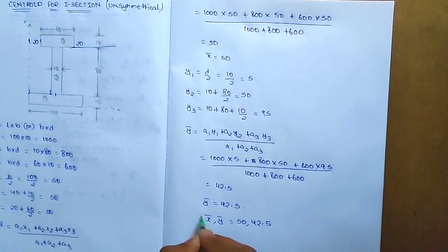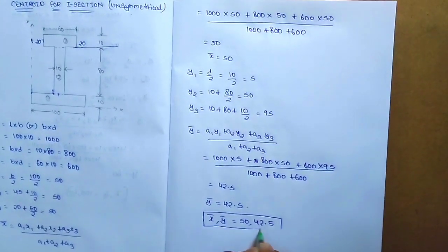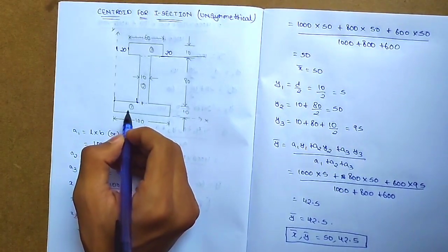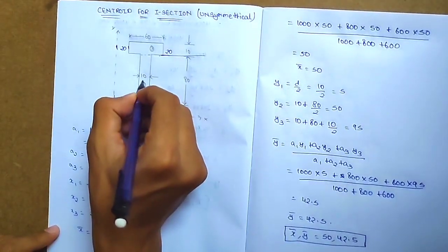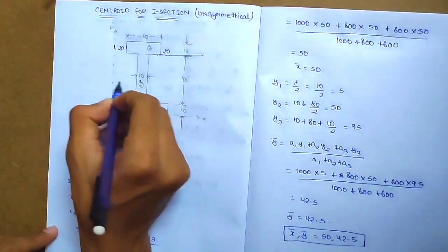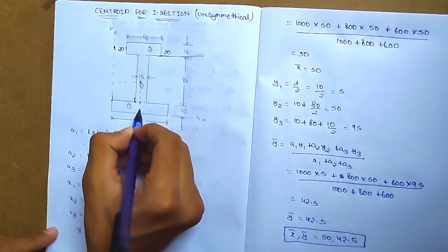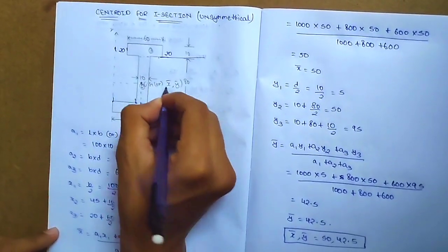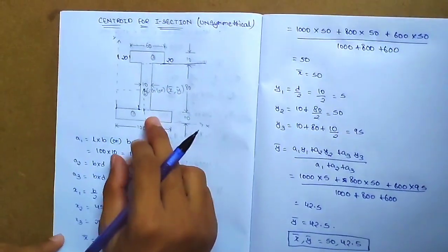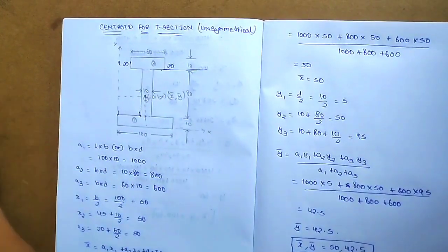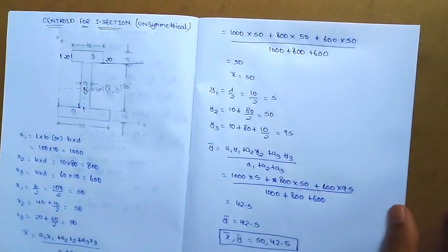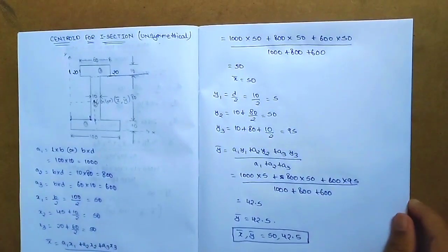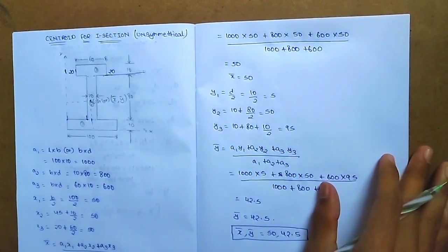So x-bar comma y-bar equals 50 comma 42.5. This is the centroid value. Now let's plot the centroid: y-bar is 42.5 from the reference, and the centroid location CG is at (x-bar, y-bar). This method works for symmetrical I-section, L-section, T-section, and other sections divided into rectangles.